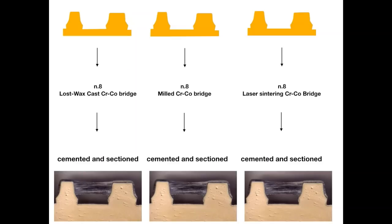On every die they applied 50 microns of spacer, except on the last 0.5 millimeter of the cervical part. Then on one third they produced chromium-cobalt bridges with lost wax casting — the traditional way with wax and casting procedure. Another third used a milling procedure, milling a blank of chromium-cobalt, and the last third produced the bridge in chromium-cobalt with laser sintering.